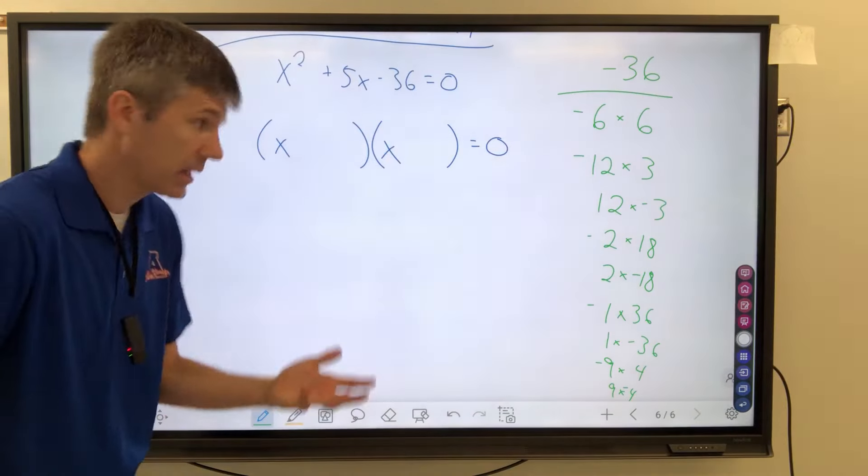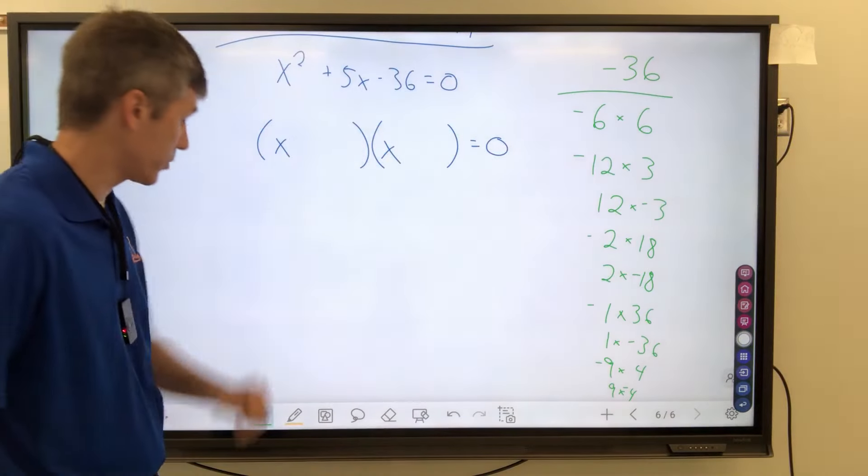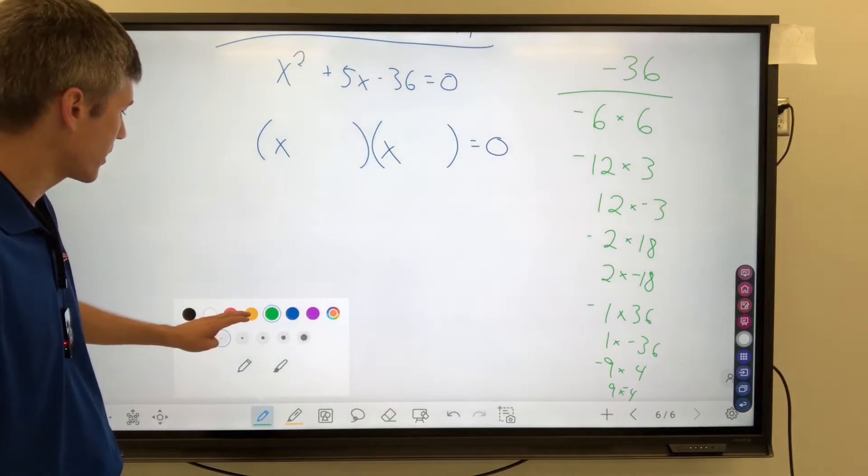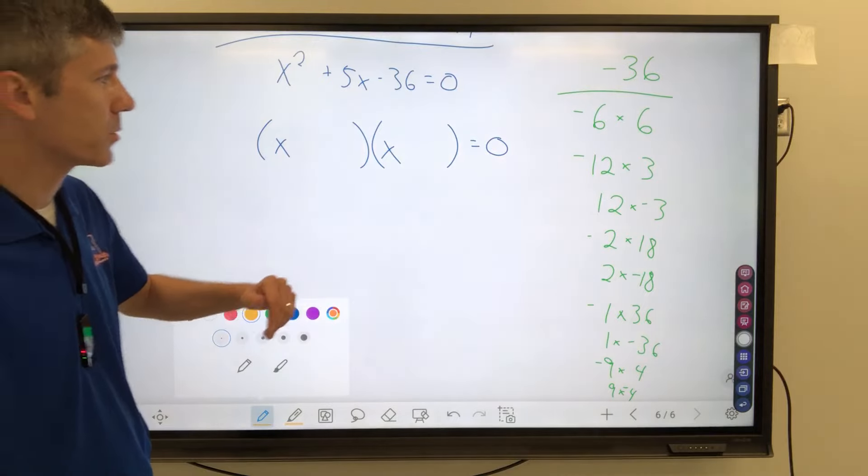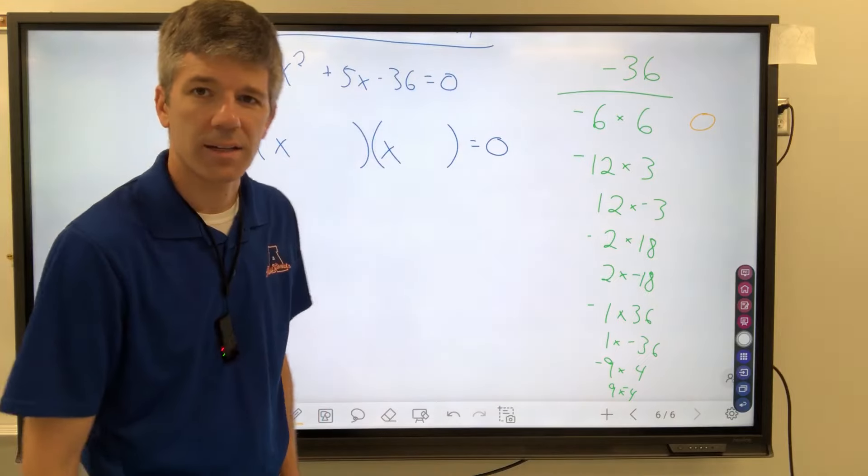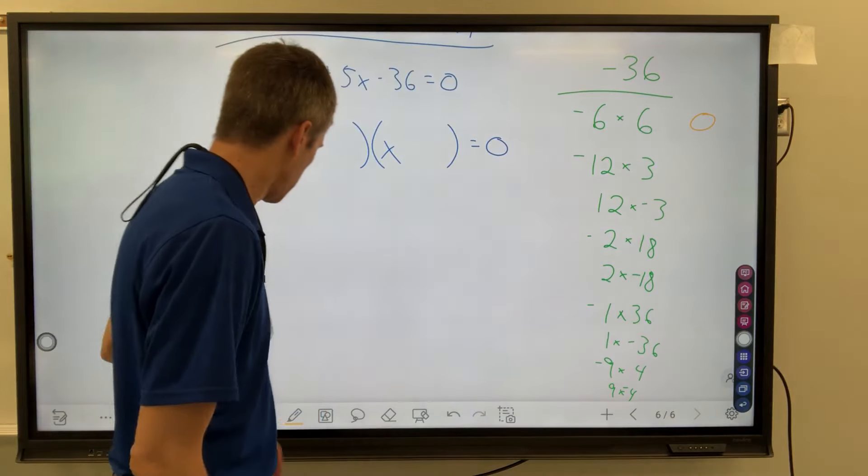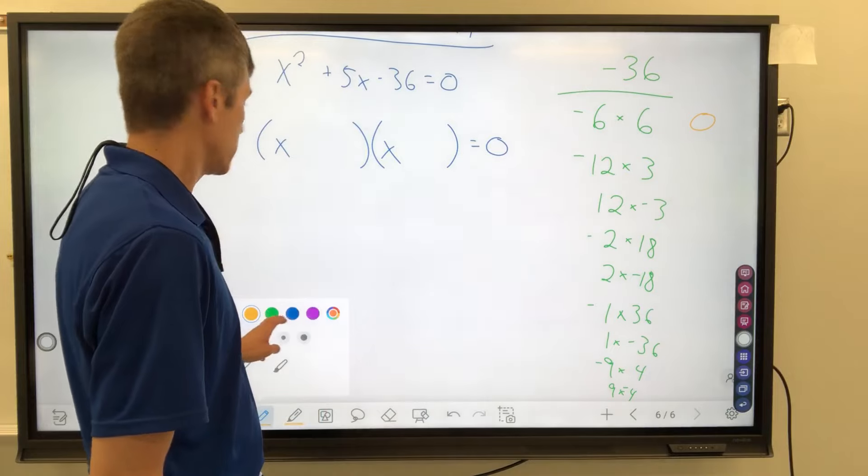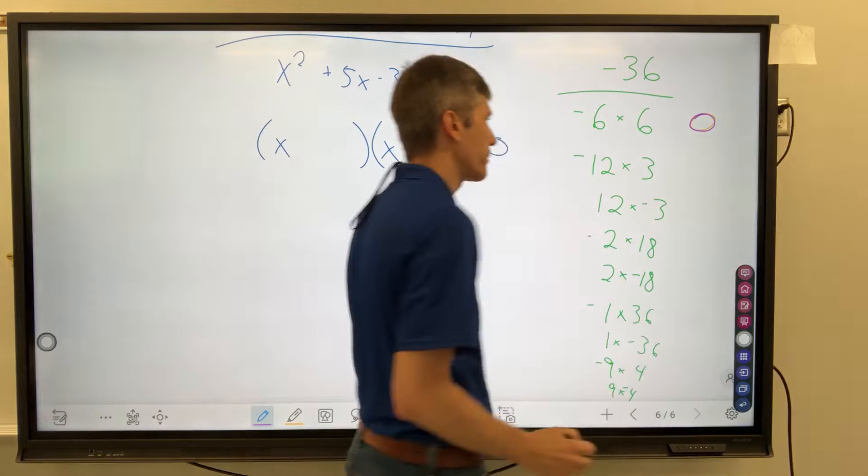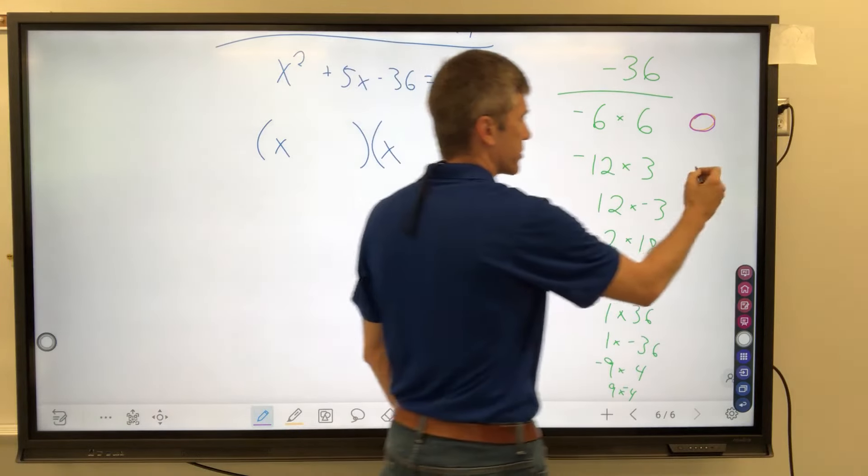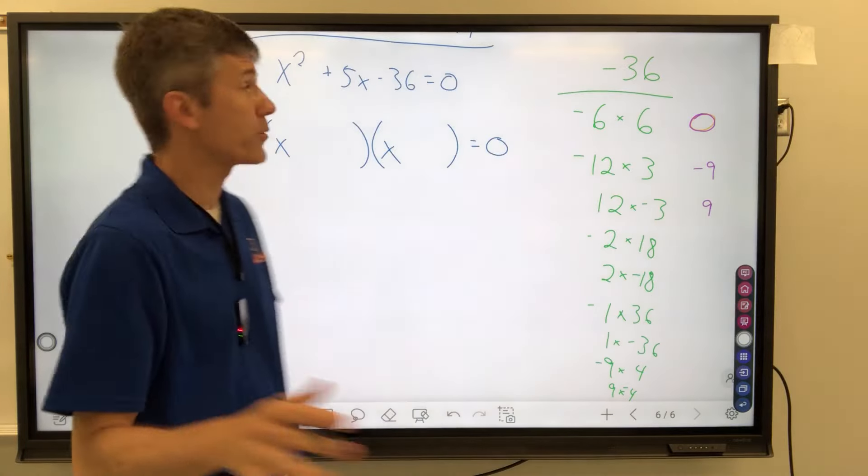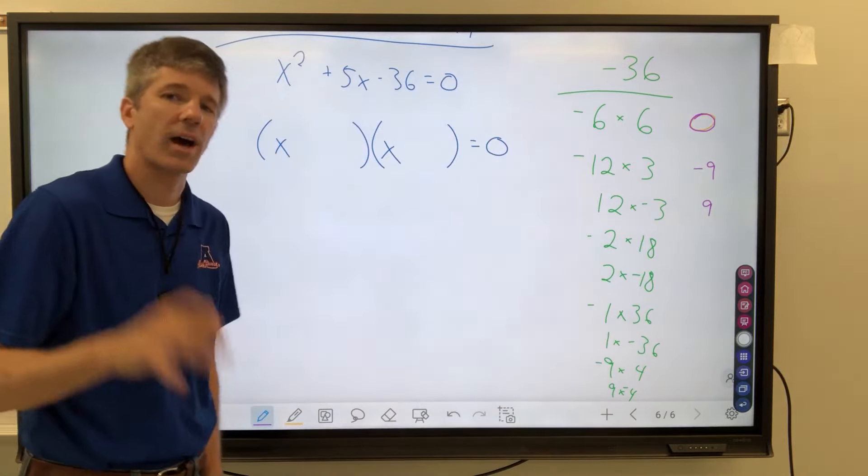There we go. Put some negatives in there, and I want to be able to multiply to get negative 36, which all of these do. However, I want to be able to add and get a positive 5, which I'm going to explore right now. Let's use yellow. Negative 6 plus 6, that's going to give me 0. That's not what I want. Negative 12 plus 3 is negative 9. 12 plus negative 3 is positive 9. Okay, again, I'm aiming for a 5.